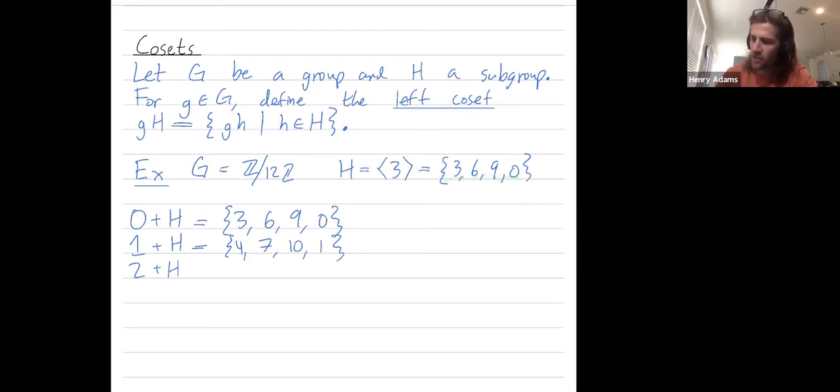I add 2 to each of these elements to get 2 plus H. So 2 plus 3 is 5, 6 plus 2 is 8, 9 plus 2 is 11, and 0 plus 2 is 2.